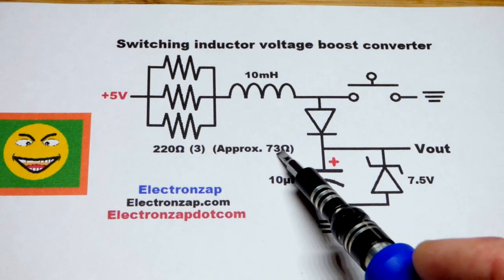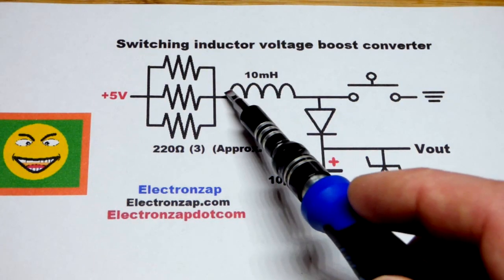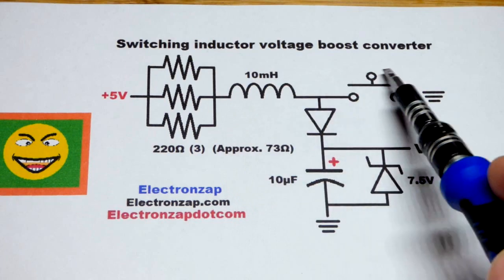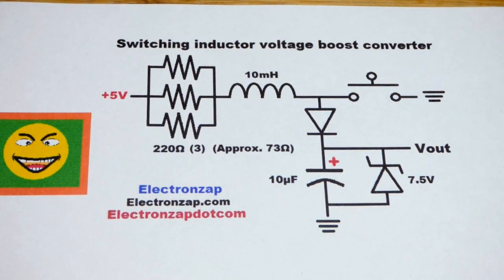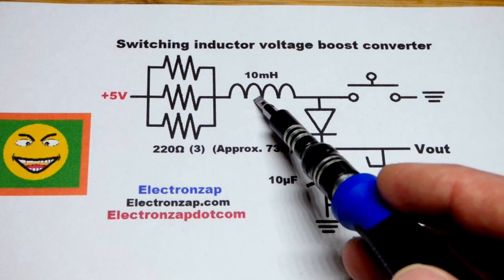We'll have about three times the current - an equivalent of about 73 ohms of resistance. My 10 millihenry inductor has about 25 ohms of resistance. I have about 100 ohms of resistance total when the switch is closed and five volts, so about 50 milliamps of current flowing - a fair amount of current.